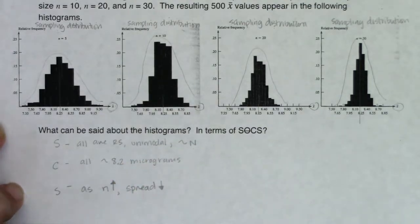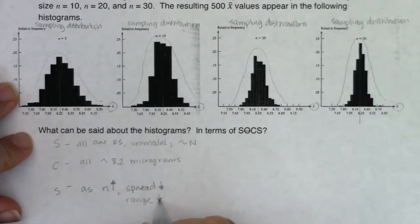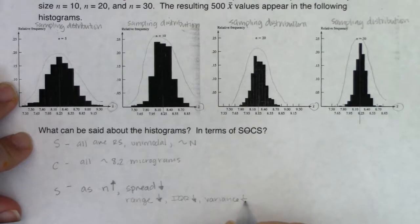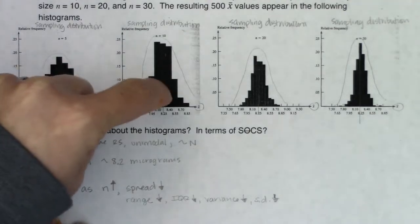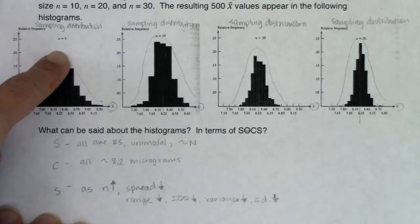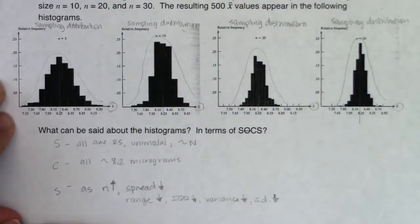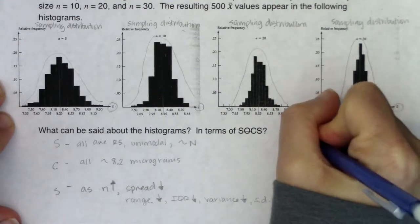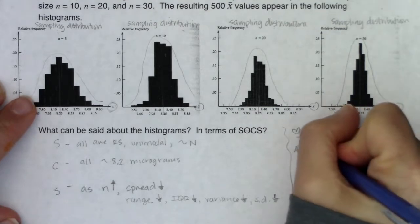If your spread is decreasing, all of your other measures of spread from Chapter 2 are also decreasing: range decreases, IQR decreases, variance decreases, and standard deviation also decreases. The takeaway: as sample size increased — going from averages of 5 people to 10 to 20 to 30 — the standard deviation decreased. Stats folks love to say: as sample size increases, variability decreases.